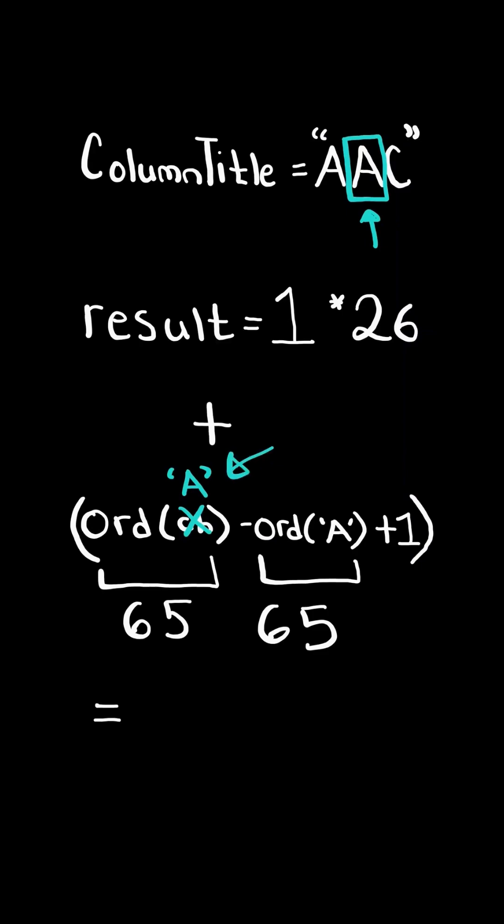Again, the character is A, so we keep the same expression, and so adding both these expressions together gives us a value of 27, and so we update the result with the new value, and we continue.